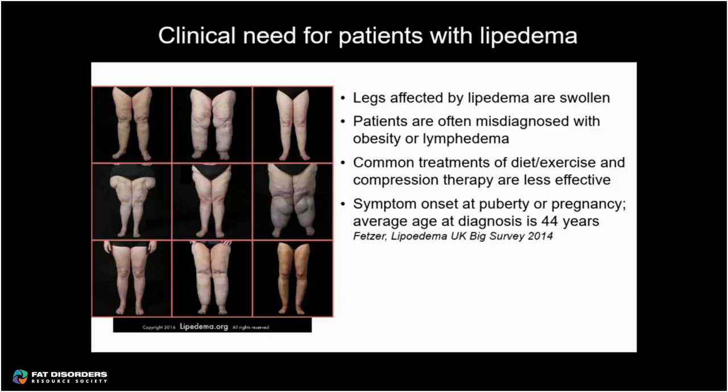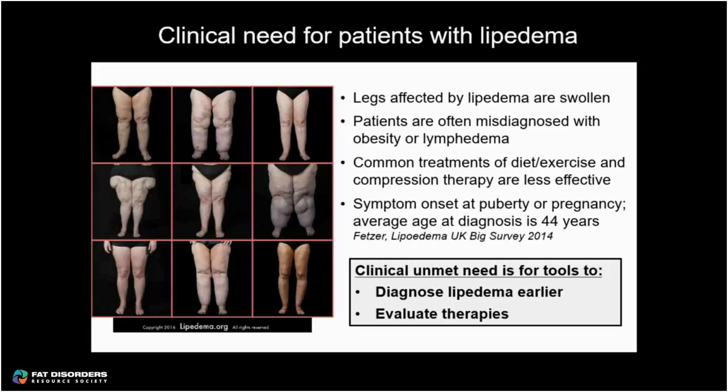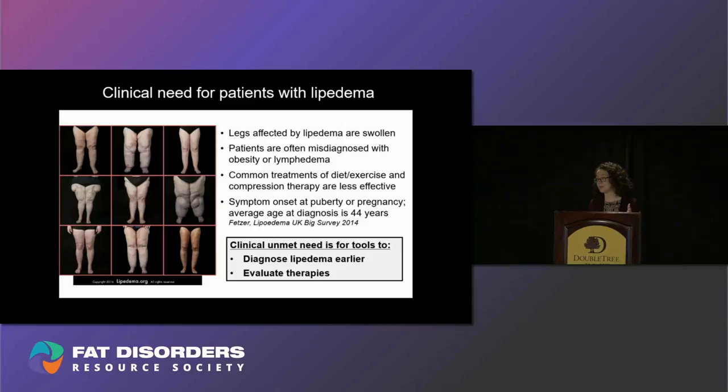The clinical unmet need for patients with lipedema is for tools that can help us better understand how the fat tissue due to lipedema is different from fat tissue in obesity or lymphedema. If we could develop tools to measure that difference, these may be useful for diagnosing lipedema earlier and evaluating new therapies that may be developed, which would benefit patients at every stage of lipedema.